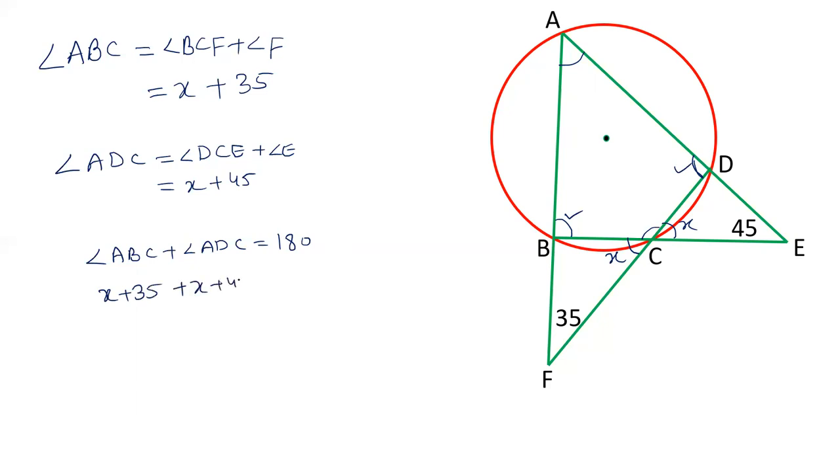ABC is X plus 35, angle ADC is X plus 45. So this is 2X plus 80 equals 180. And therefore, 2X equals 100 and X equals 50 degrees.